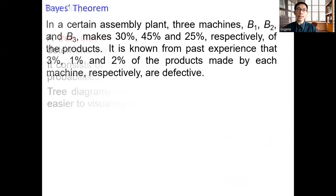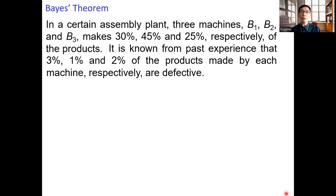Let's take a look at the example we have gone through in the last video. In a certain assembly plant, three machines b1, b2, and b3 make 30%, 45%, and 25% respectively of the product. It is known from past experience that 3%, 1%, and 2% of the products made by each machine respectively are defective.